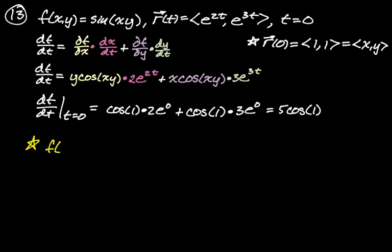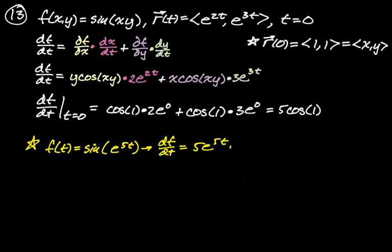We're finding df/dt here because we can rewrite f as a function just of t. f(t) = sin(e^(2t) · e^(3t)) = sin(e^(5t)). This is really just a Calc 1 derivative: df/dt = 5e^(5t)·cos(e^(5t)). At t = 0, that gives 5·cos(1) — the same answer either way. We're practicing the chain rule. I'll stop here and pick up with the rest of the problems in the next video. Hope this was helpful, good luck.